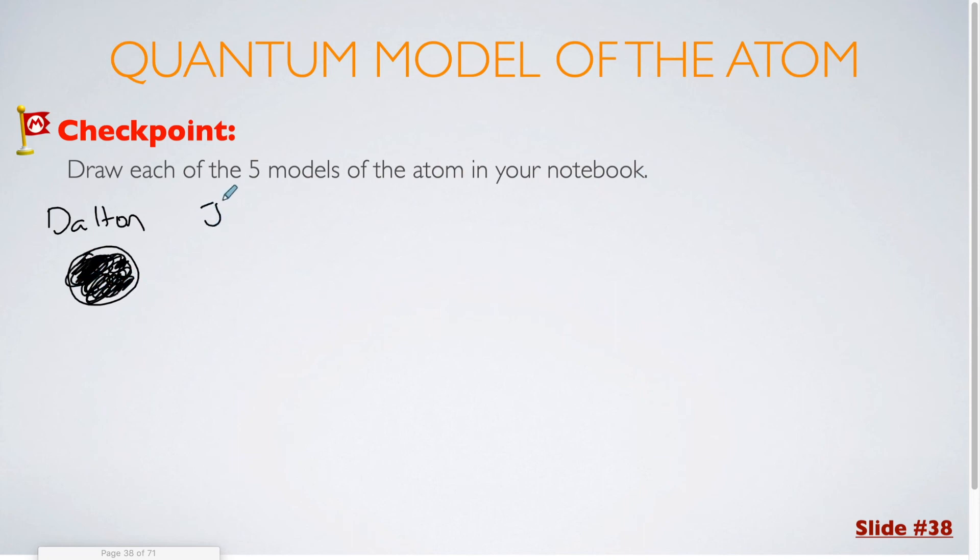Next up, you would have J.J. Thompson with the Plum Pudding model. For that model, you would have a big positive charge throughout the entire atom, which is often shown by a giant plus sign. You would then have the little negative electrons that are spread evenly throughout the entire atom. That's J.J. Thompson's Plum Pudding model.